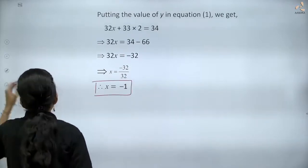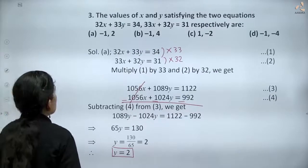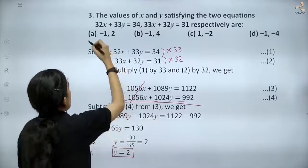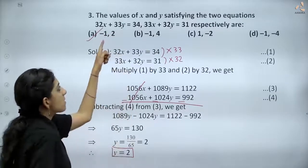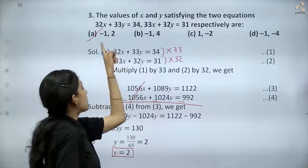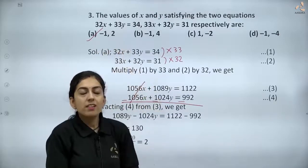So the correct option is x = -1 and y = 2, which is option (a). Thank you.